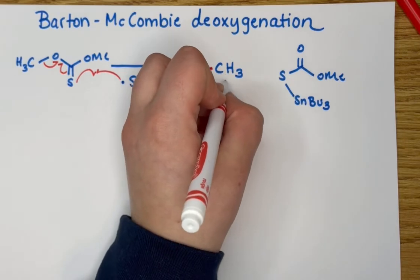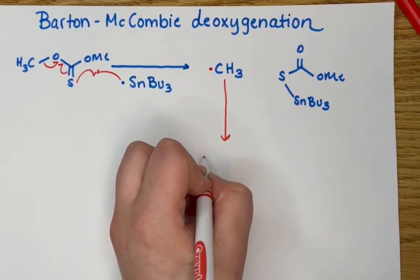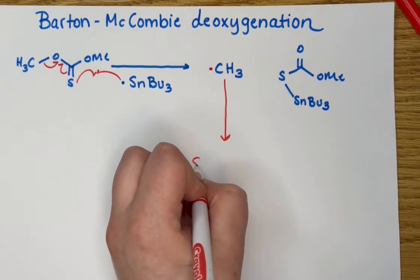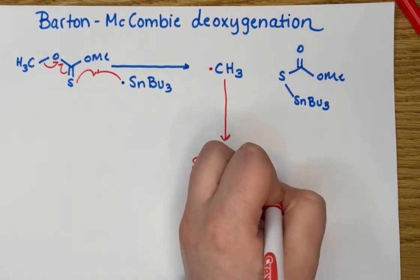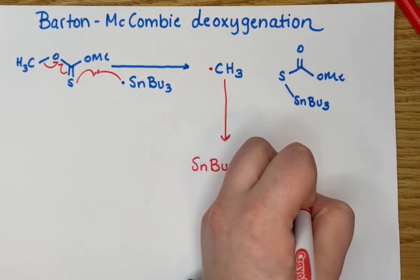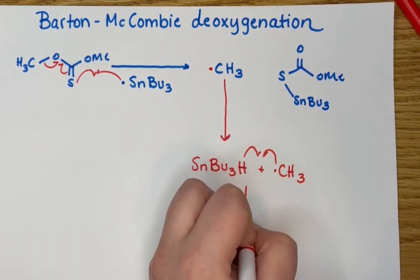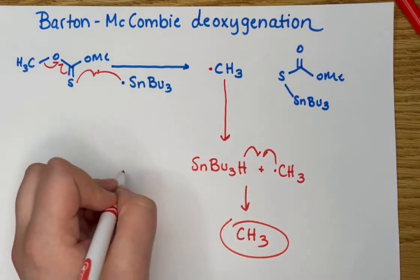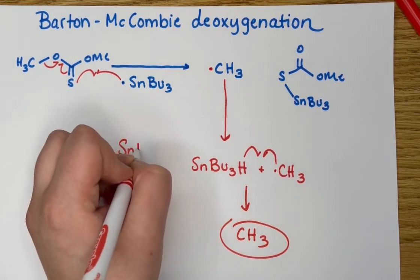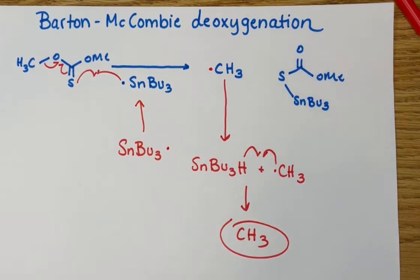Our methane radical, kind of like in the other reaction, will now combine with the tributyltin hydride so that we can regenerate that radical and end up with our desired material. So we get our methane and then another tributyltin radical to go through that reaction again.